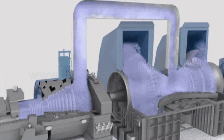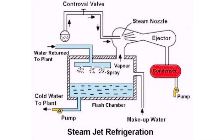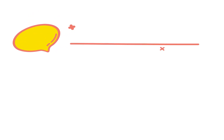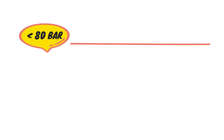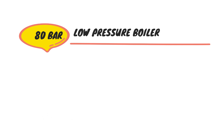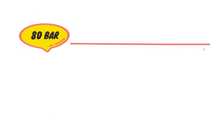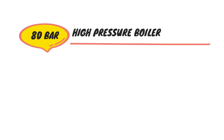In some cases we can also utilize this steam in dairy industry, textile industry, power generation, and steam refrigeration. There are so many applications of steam, as we have already discussed in our previous lecture. The boiler which generates steam below 80 bar pressure is called a low pressure boiler.